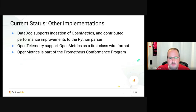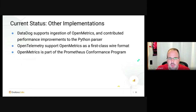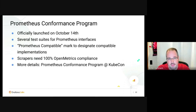If you scrape through the Prometheus exposition format by actively negotiating it, it's exposed in a backwards-compatible manner. Datadog supports ingestion of OpenMetrics and has for quite some time — they even contributed performance improvements to the Python parser. OpenTelemetry supports OpenMetrics as a first-class wire format.